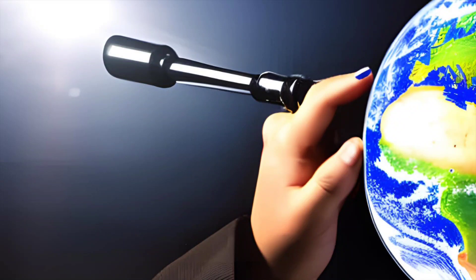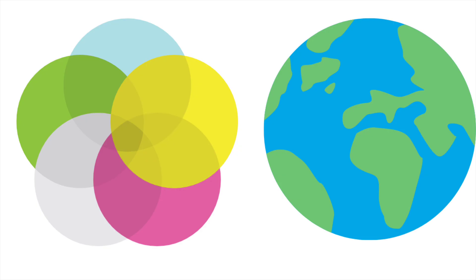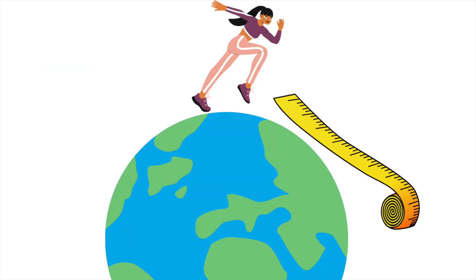How to Calculate the Circumference of Earth. For those who don't know, circumference is the length of a circle. Earth is essentially a sphere — it's made of circles — and so we are finding the length of one of Earth's circles.